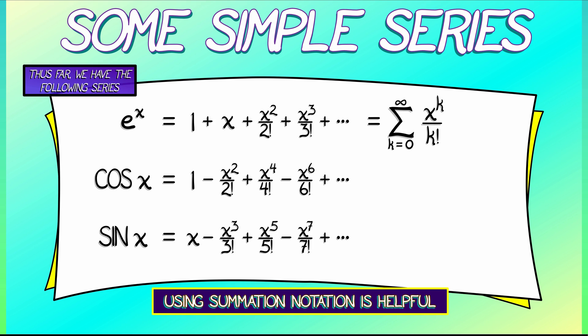For cosine of x, we have the sum k goes from 0 to infinity, negative 1 to the k, x to the 2k, divided by 2k factorial.